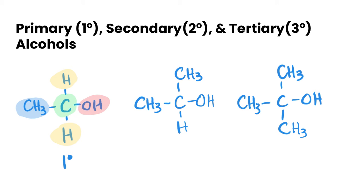If we look at the next one and do the same thing, our carbon attached to our functional group is now attached to two alkyl groups and one hydrogen. Because it's attached to two other alkyl groups, this is called a secondary alcohol.